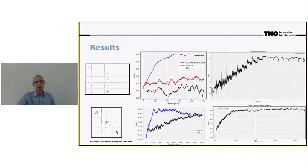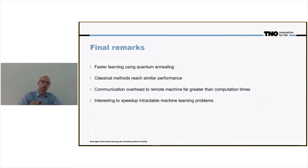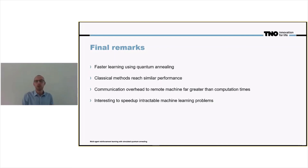These were the results. Some final remarks. We saw that using the quantum approach — using the quantum annealing approach — we learn the optimal policy much faster than using the deep reinforcement learning classical approach.